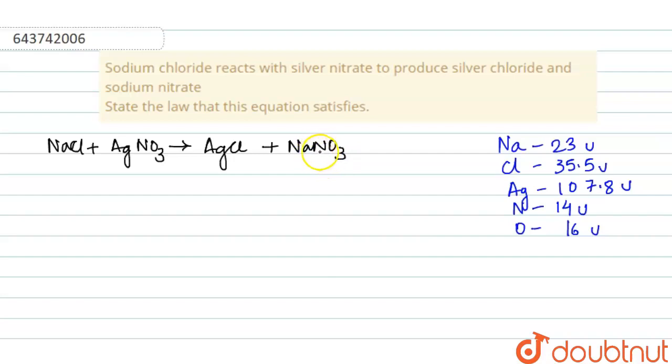Now we have to see what is the weight of the reactants and products. For that, first we have to find that of NaCl. NaCl is 23 plus 35.5 atomic mass unit, which equals 58.5 atomic mass unit.